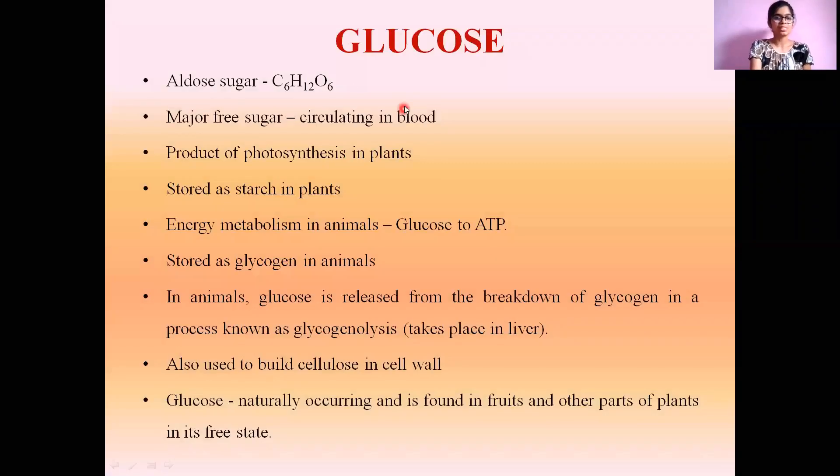Glucose is an aldose sugar with the molecular formula C6H12O6, and it is the major free sugar circulating in blood. It is also the product of photosynthesis in plants, a process by which plants prepare their own food in the presence of sunlight and carbon dioxide, providing oxygen and energy. This energy is in the form of glucose, which is stored as starch in plants.